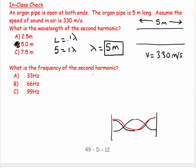And then I say, what is the frequency at the second harmonic? Well, V is equal to F lambda. So 330 is equal to the frequency times 5. So F is equal to 66 hertz.